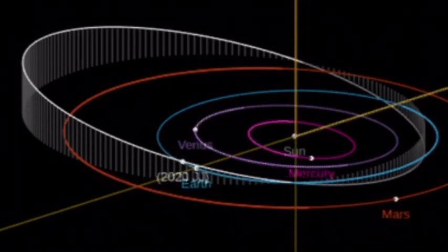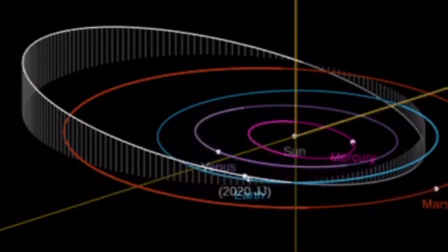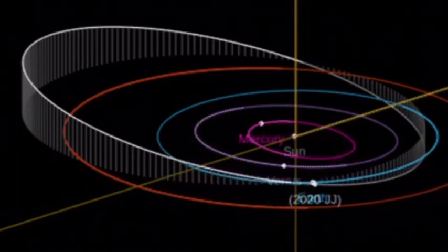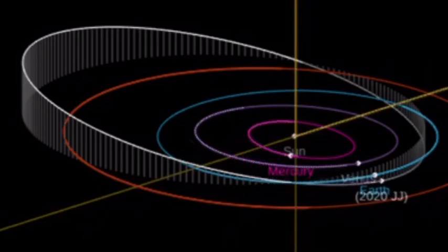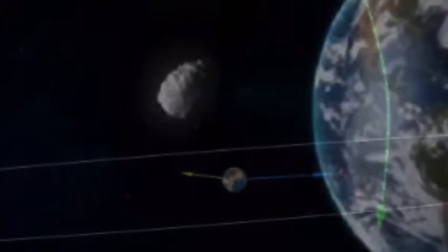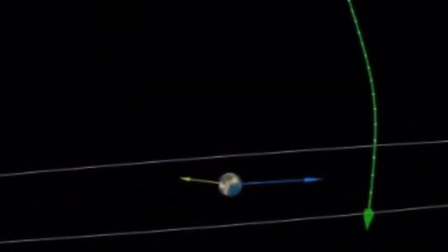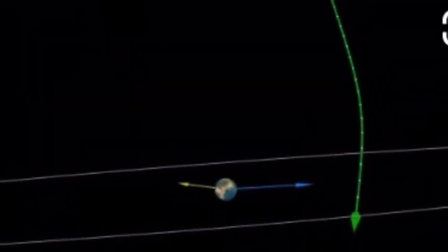It should be noted that the top 10 close approaches have all come since 2004. This isn't because asteroids started attacking us in the 21st century. Rather, it says something about how astronomers and their technology are becoming better at spotting ever smaller and closer asteroids.